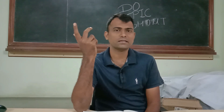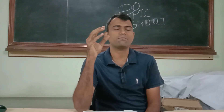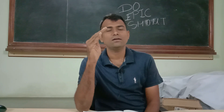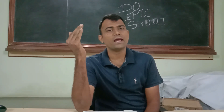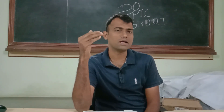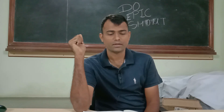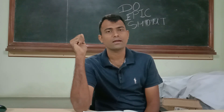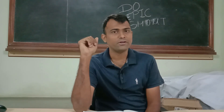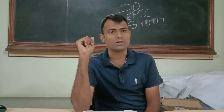Ek jod ki tarah dekh sakte hai — articles ek chapter ki tarah hai, aur schedules appendix ki tarah hai. Agar kisi chiz ki listing hai, kuch naam daalne hai, toh woh appendix mein hota hai. Thik hai? Isi ke saath aaj ka video yahan samapt karta hun. Thank you very much.